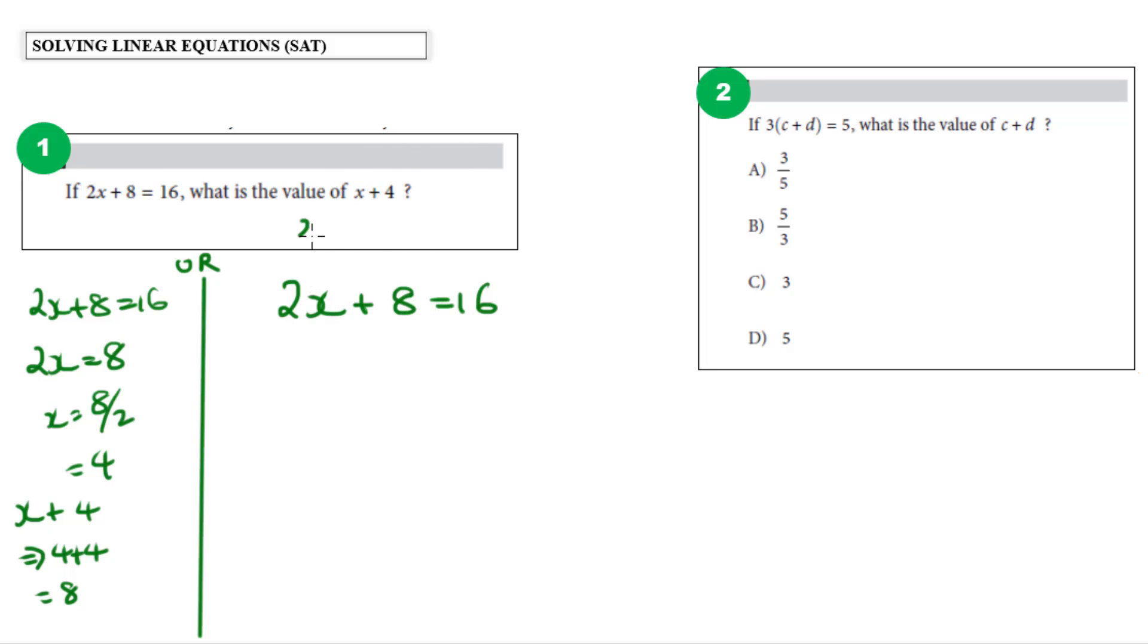So that means if I divide 2x plus 8 by 2, then that would give me x plus 4. And because of what I know about equations, if I divide this side by 2, I divide that side by 2. So x plus 4 must be equal to 8.